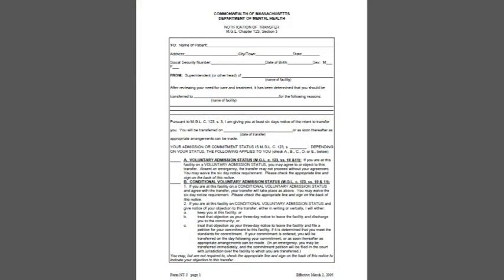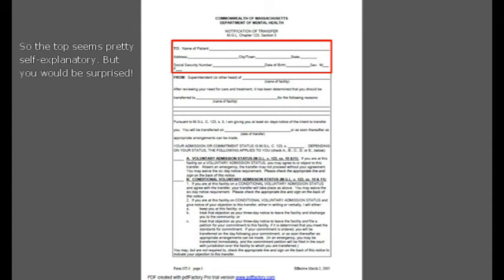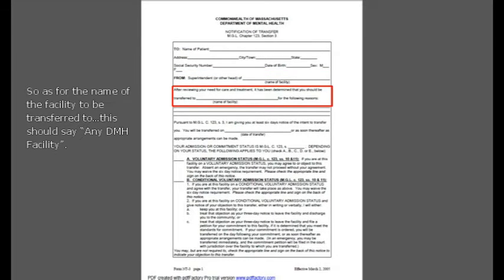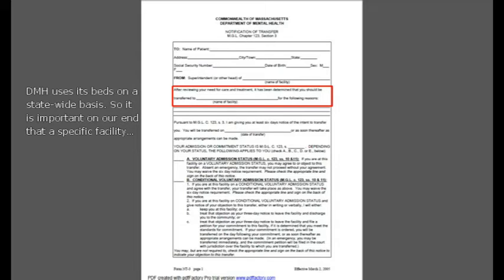Let's quickly walk through the form. The top seems pretty self-explanatory, but you'd be surprised. Be certain that the FROM line lists your facility, not ours. Please fill out the form completely. As for the name of the facility to be transferred to, this should say 'any DMH facility.' DMH uses its beds on a statewide basis, so it's important on our end that a specific facility — say, Tewkesbury State Hospital — not be named, so that we can have this flexibility.